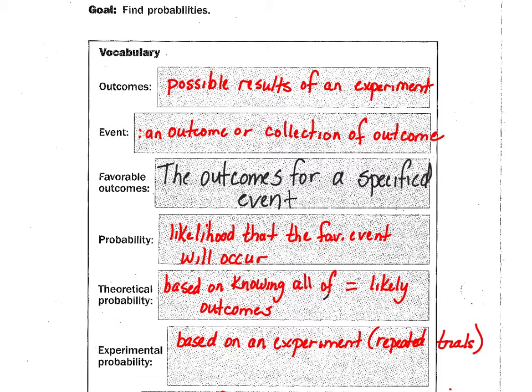We're going to start with outcomes. So the possible results of an experiment, if I stand up here and toss a number cube, a.k.a. a die, what are the possible results of the experiment? What could you get?